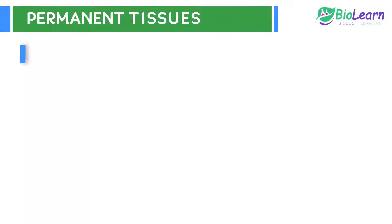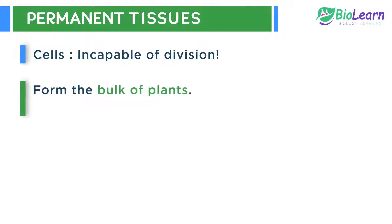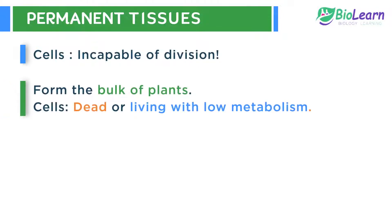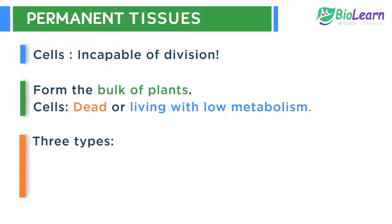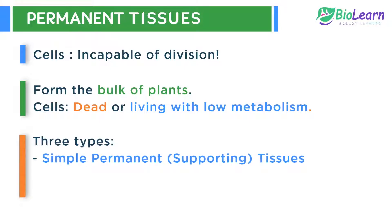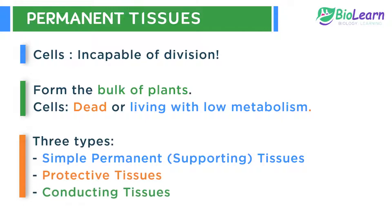Permanent tissues are made up of cells which are incapable of division. They form the bulk of the plants and have a definite form and size. The cells may be living or dead with thin or thick walls. If living, the cells have low metabolic rate. Permanent tissues can be categorized into three kinds based on the functions performed by them: supporting tissues or simple permanent tissues, protective tissues, and conducting tissues.